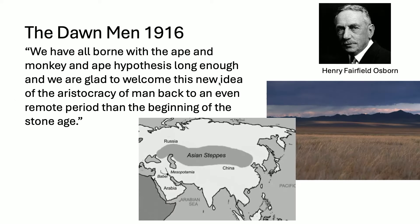In 1916, Henry Fairfield Osborne, who was director of the American Museum of Natural History, wrote a book called The Dawn Man. He suggested that the divergence between apes and humans occurred in the Oligocene, about 30 million years ago, and that human fossils probably originated not in Africa but in the grassland steppes of Asia — and he connected their origin with horses, because he studied horses.